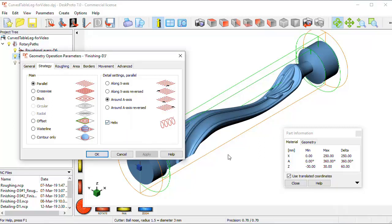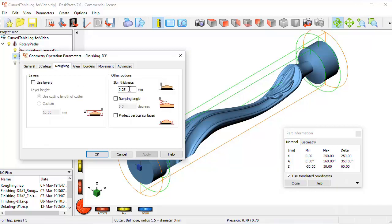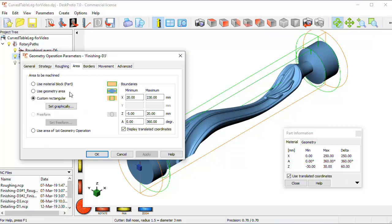It will be one very long toolpath from start to end. Very small skin thickness is left to be taken off while detailing. The area is set a bit smaller, OK.